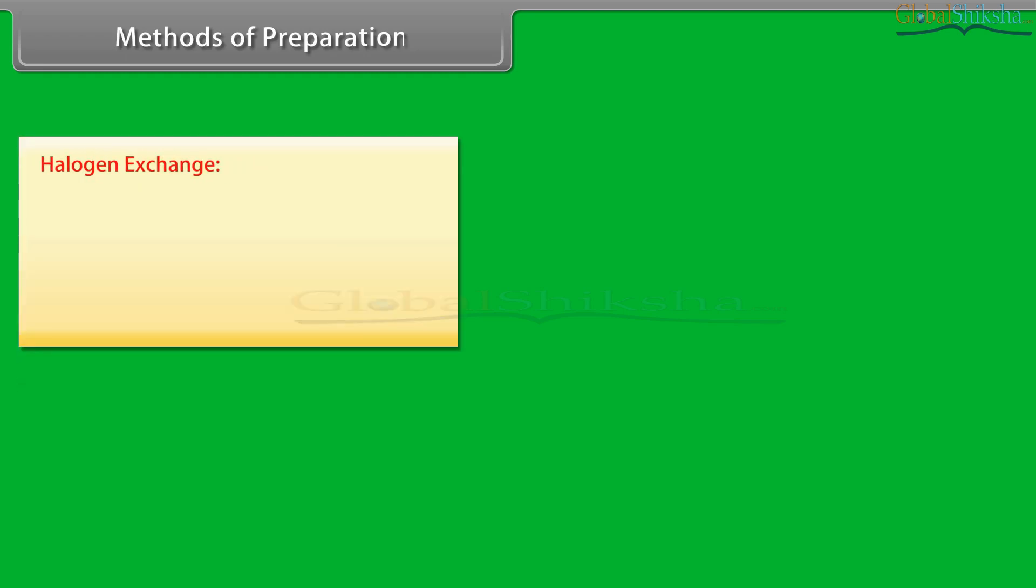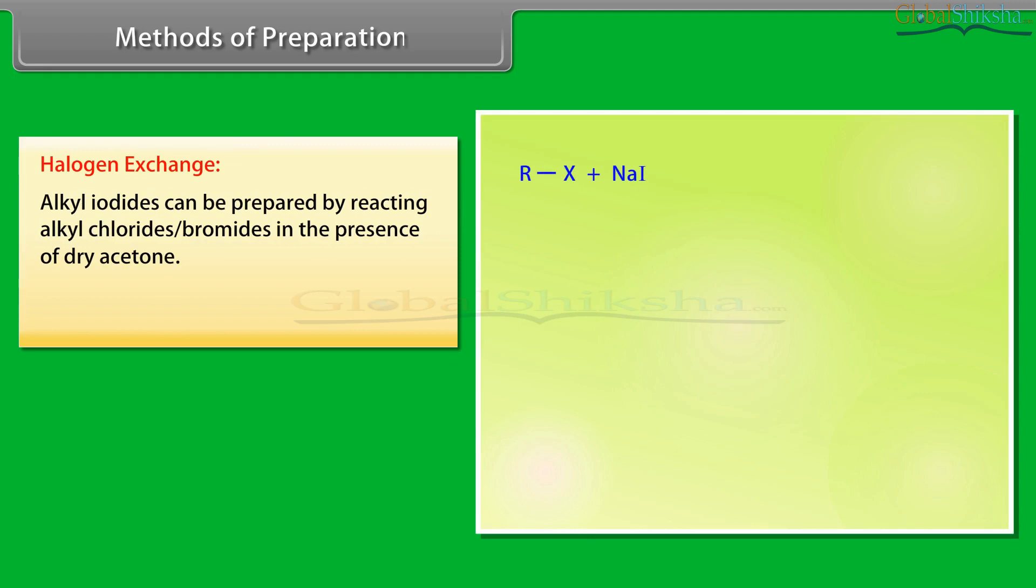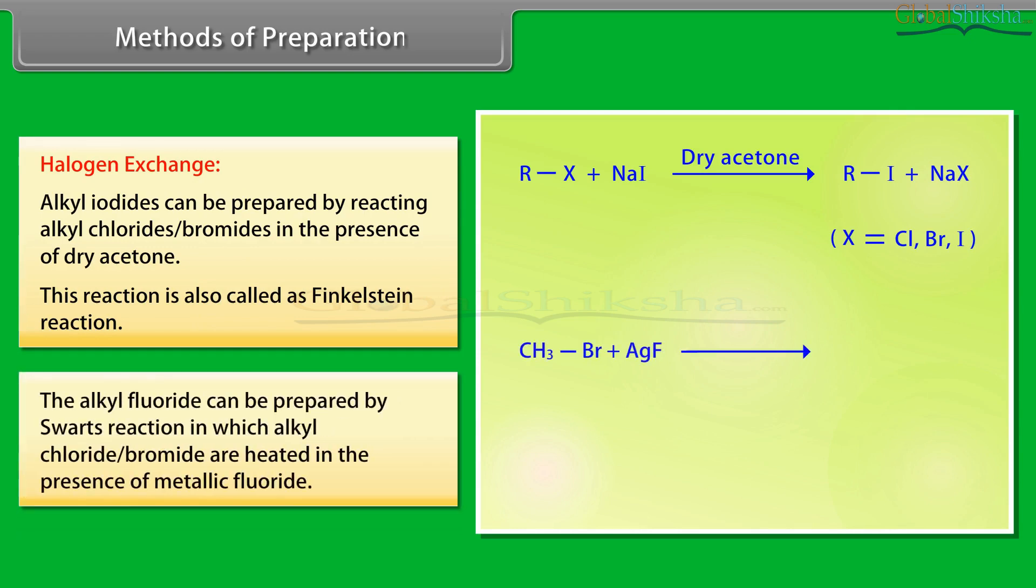Halogen Exchange: Alkyl iodides can be prepared by reacting alkyl chloride bromides in the presence of dry acetone. This reaction is also called as Finkelstein reaction. The alkyl fluoride can be prepared by Swartz reaction in which alkyl chloride bromide are heated in the presence of metallic fluoride.